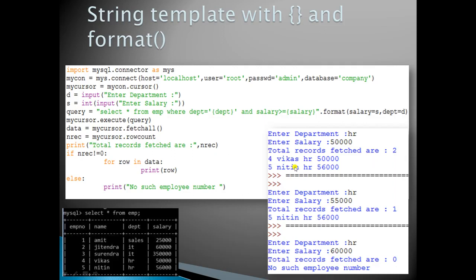Looking at the program: import mysql.connector, establish the connection object, and call the cursor function. Input d for department and s for salary. The query is: SELECT * FROM employee WHERE department = {dept} AND salary >= {salary}. Then call .format(salary=s, department=d) to substitute the named placeholders with the input values, and execute the query.